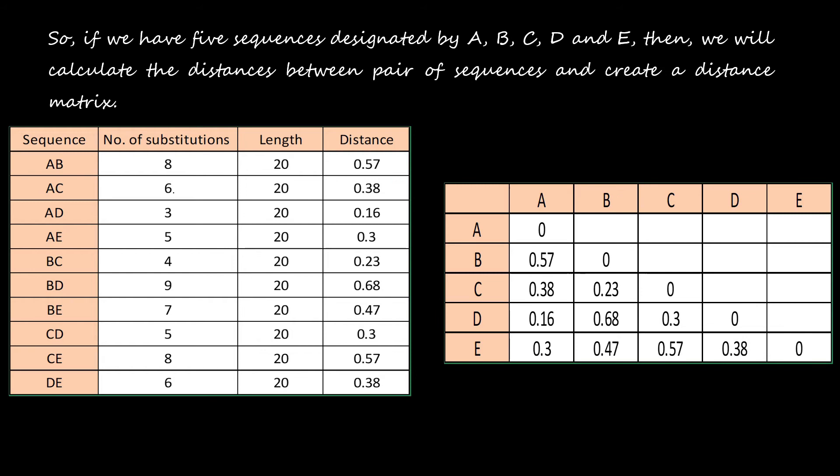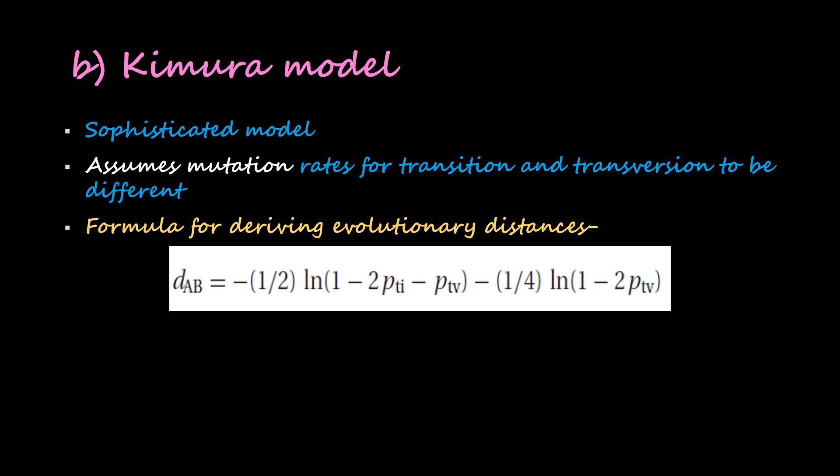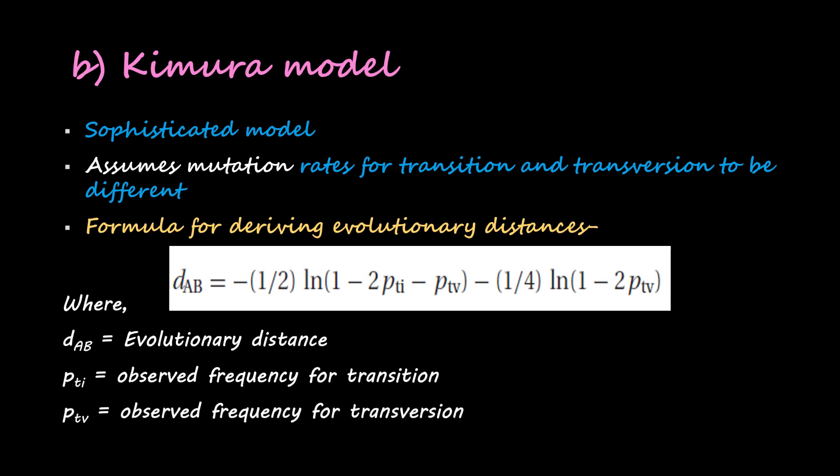Next type of substitution model is Kimura model. It is a more sophisticated model and assumes mutation rates for transition and transversion to be different. The formula for deriving evolutionary distances is: dAB = -1/2 ln(1 - 2pti - ptv) - 1/2 ln(1 - 2ptv), where dAB is the evolutionary distance, pti is the observed frequency for transition, and ptv is the observed frequency for transversion.